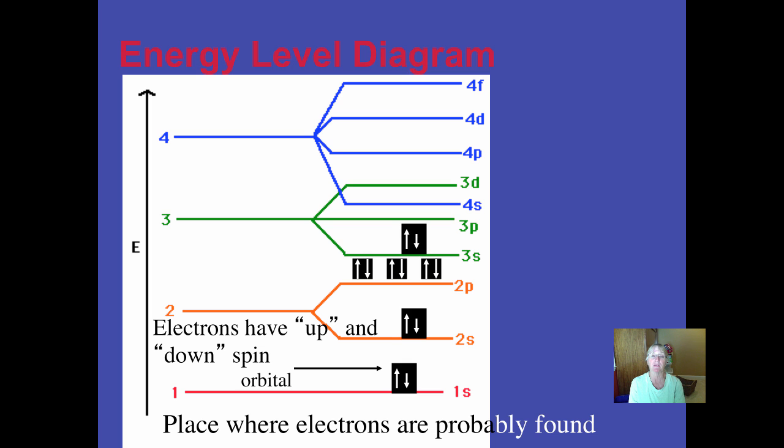So the next sub-level to fill would be the 3s. The next one would be the 3p. Now, it means you're at the third energy level, and you will have three of these dumbbell-shaped orbitals, which I'll show you in a moment.